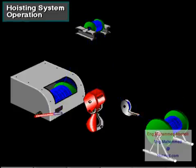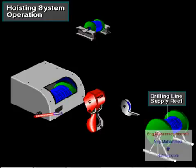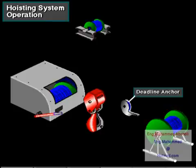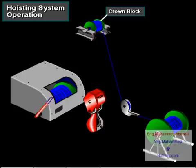Here's an overview of how the hoisting system operates. The supply reel stores drilling line. To wreathe the line, crew members start at the deadline anchor. They pull the line from the supply reel and spool it around the disc on the anchor. They then lift the line to the top of the mast, to the crown block.